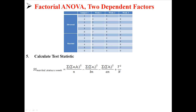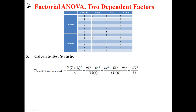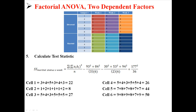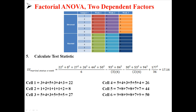Next is the interaction of marital status and week. We already have the last three parts of the equation, so we just need the first part: the sum for each level of A at each level of B. We have six total cells with cell sums of 22, 8, 27, 26, 44, and 50. We square those numbers, add them, and divide by n (6), then subtract the previously found components. Working that out gives a sum of squares interaction of 17.16.